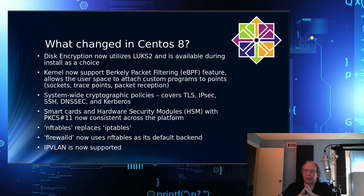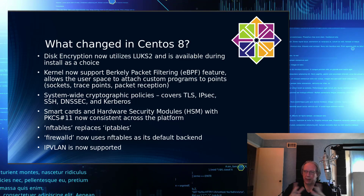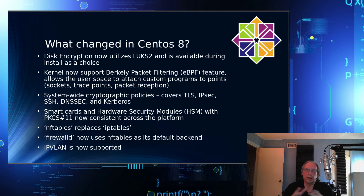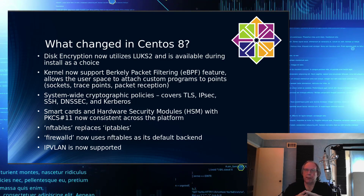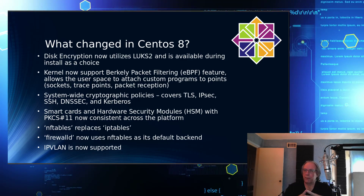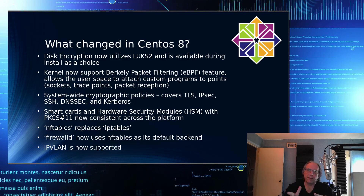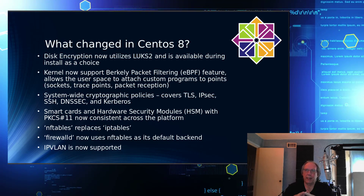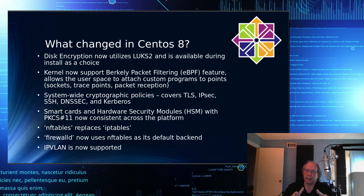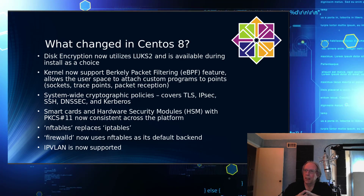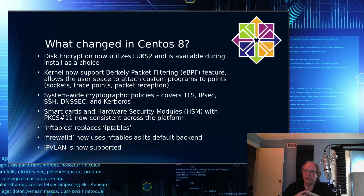Disk encryption now utilizes LUKS version 2, and that's available during the install as a choice, so you can encrypt your hard drive — it'll require a password to unlock and decrypt it. Kernel support is now provided for the Berkeley Packet Filtering system, which allows attaching custom programs to points like sockets, trace points, or packet reception — good news for developers. System-wide cryptographic policies include TLS, IPSec, SSH, DNSSEC, and Kerberos. Smart cards and hardware security modules are supported with PKCS number 11.